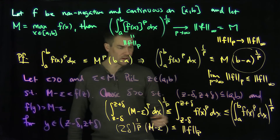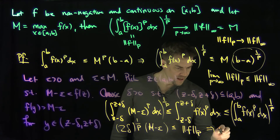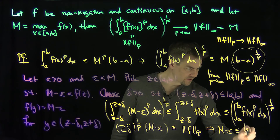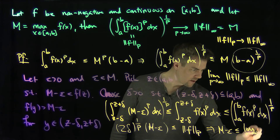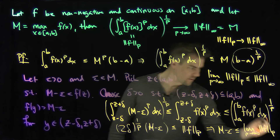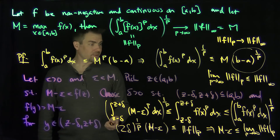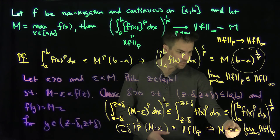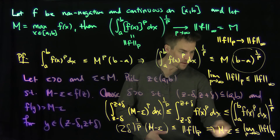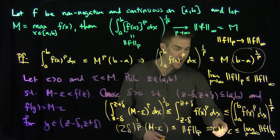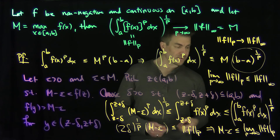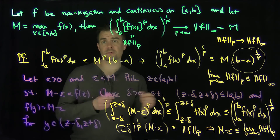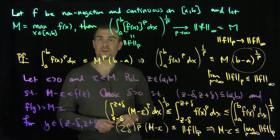As p goes to infinity, 2 delta to the 1/p goes to 1, so this implies that M minus epsilon is less than or equal to the limit as p goes to infinity of the Lp norms of f. Since this is true for every epsilon, this limit is sandwiched between M minus epsilon and M for every epsilon. Therefore the limit exists and the Lp norms converge to the L infinity norm. Thank you very much.